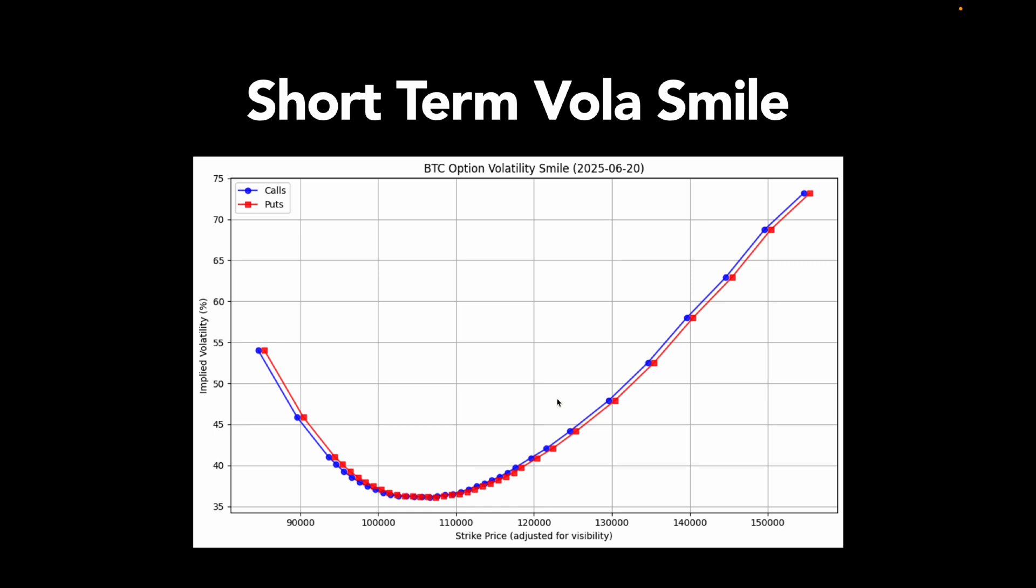You'll notice that volatility is lowest right around the current price, 105,000 US dollars as we speak, called at the money. That's pretty normal. It means the market isn't expecting huge moves right around the current price. But once you start moving away, either to higher strikes or lower strikes, implied volatility jumps up fast.